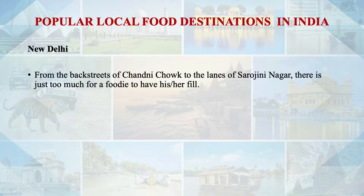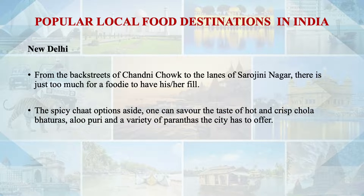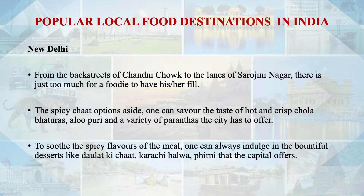In New Delhi, from the back streets of Chandni Chowk to the lanes of Sarojini Nagar, there is a lot of food variety available. Since it is a cosmopolitan city, we have food products such as spicy chaat options, chole bhature, aloo puri and a variety of parathas. All these spicy flavors are popular among cultural tourists who visit Delhi, along with Karachi halwa and specific desserts.